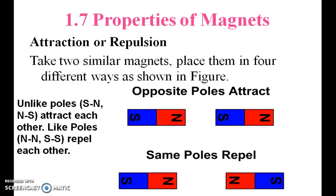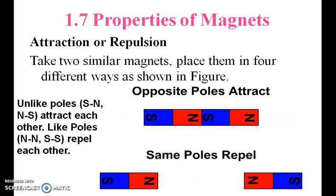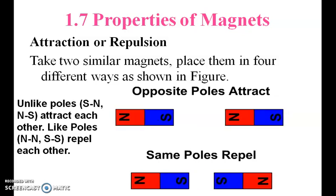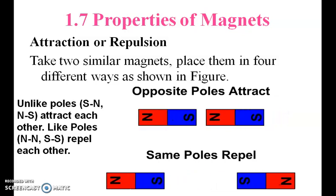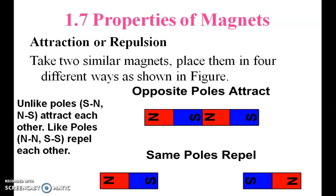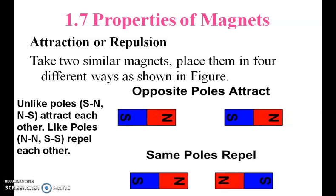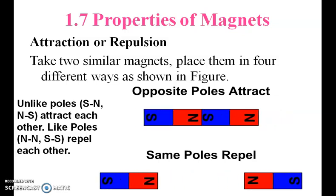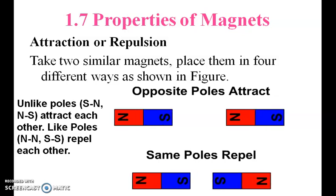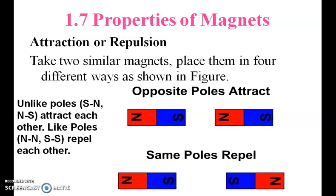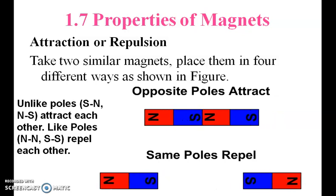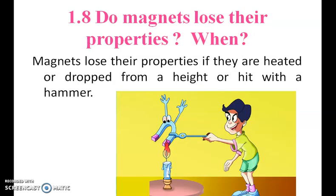The properties of magnets include attraction and repulsion. Take two similar magnets and place them in four different ways as shown in the figure. Unlike poles — that is, north pole and south pole — attract each other. Like poles repel each other: south-south repels, and north-north repels.